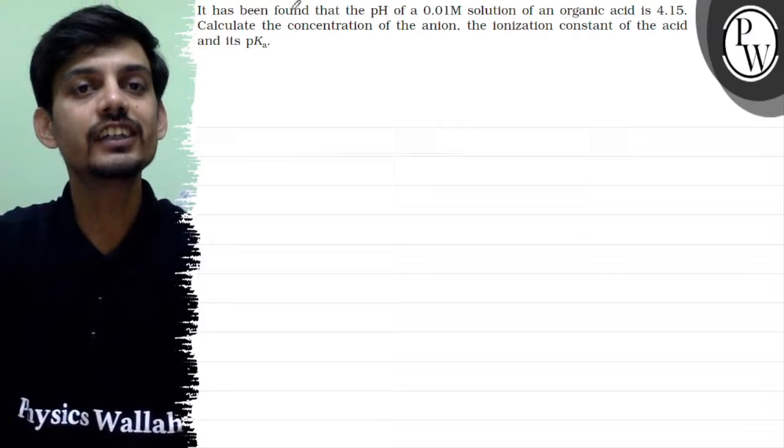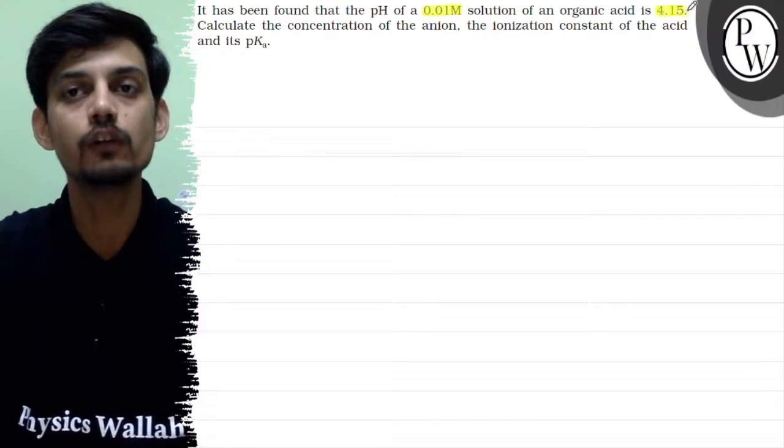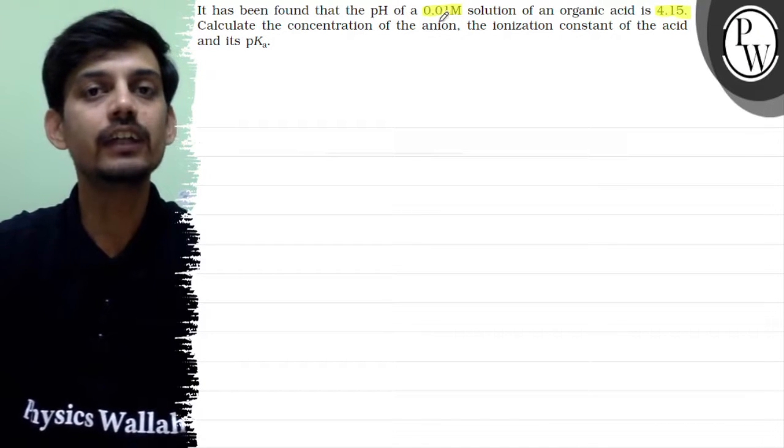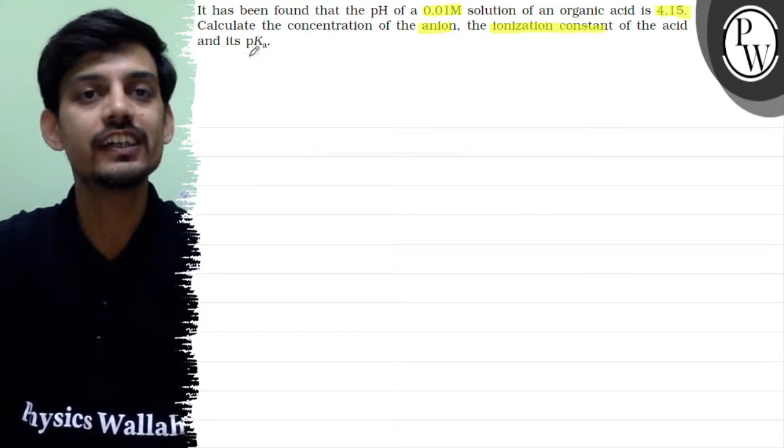Hello, the question says it has been found that the pH of a 0.01 molar solution of an organic acid is 4.15. Calculate the concentration of the anion, the ionization constant of the acid, and its pKa.